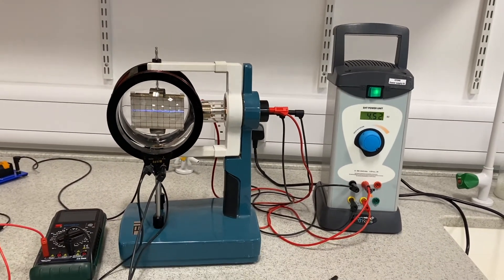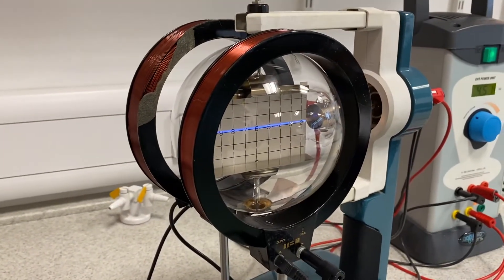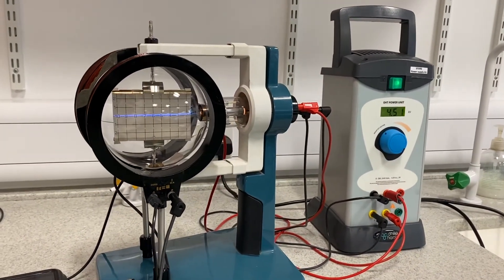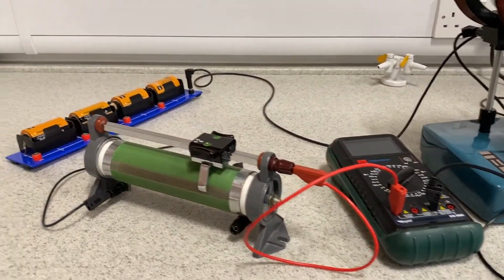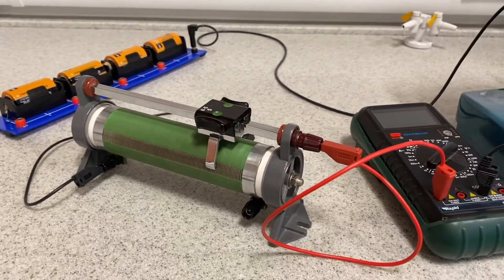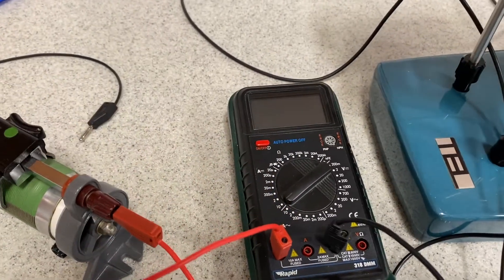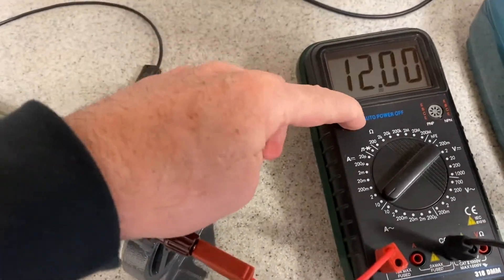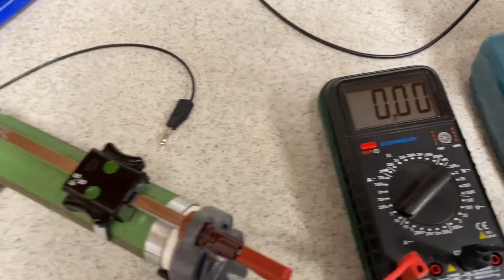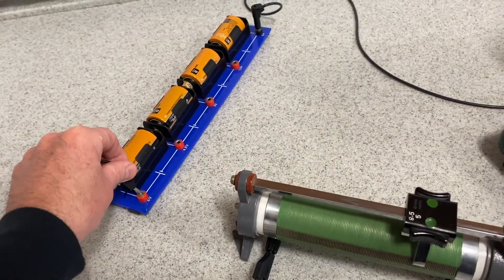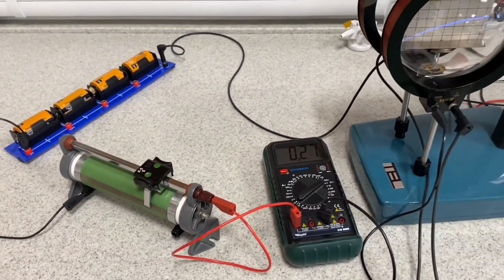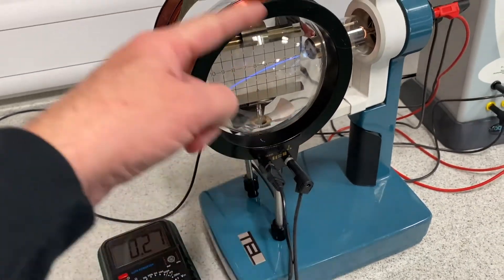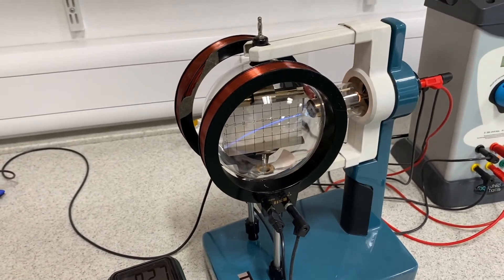We have our Helmholtz coils attached that can provide a magnetic field to deflect the beam, and we've also got a 6 volt battery pack, a variable resistor, and an ammeter to measure the current. Let's turn the ammeter on and we're going to connect this little series circuit so that a current is flowing from the battery pack through the Helmholtz coils which are in series, and they are providing our magnetic field.